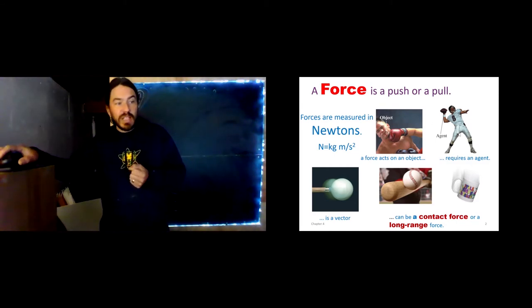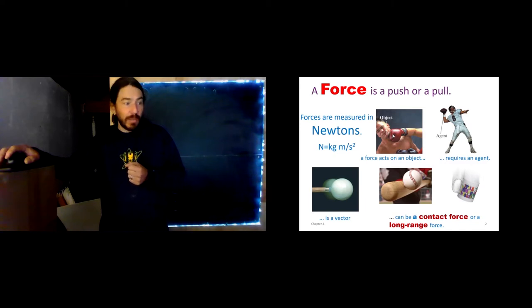Now, every force requires an agent. It's an interaction between two objects. There has to be the thing that the force is on, we call that the object. And there is the thing that is causing the force to happen, we call that the agent. So in this case, we see this football player throwing a ball. The object is the ball. The agent is the player's hand. In this case, I suppose the object is the boxer's face. The agent is the boxing glove.